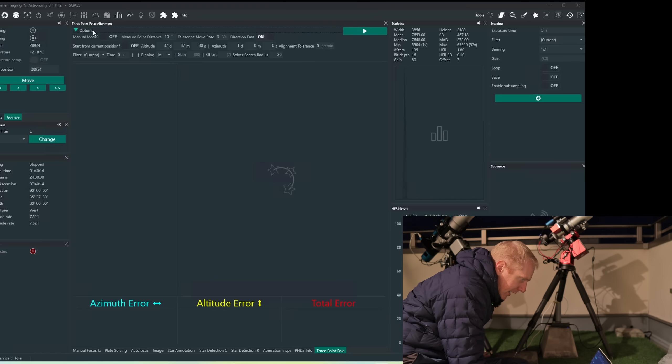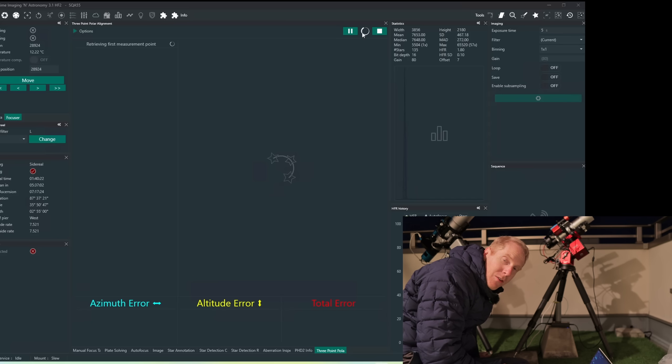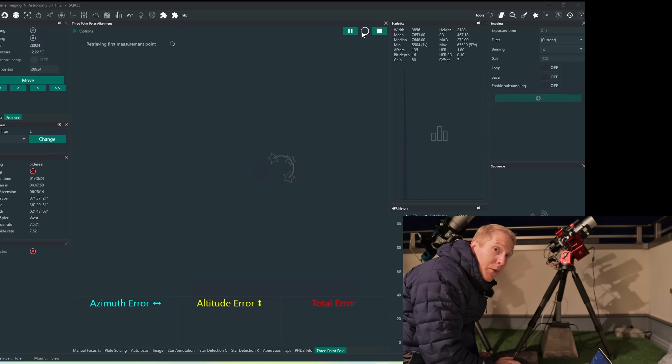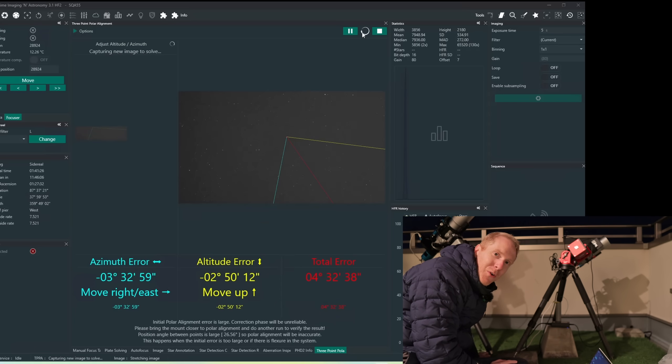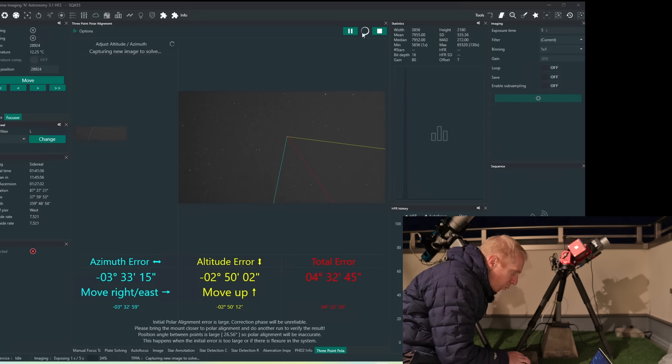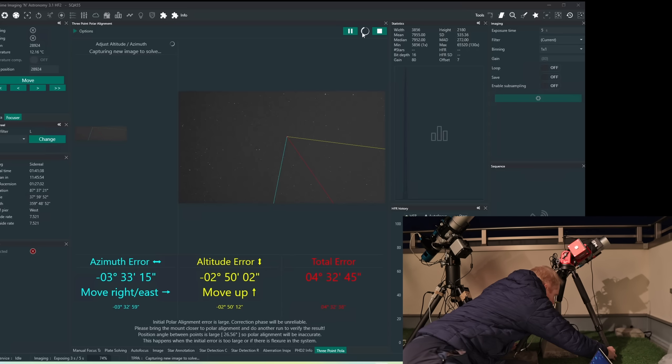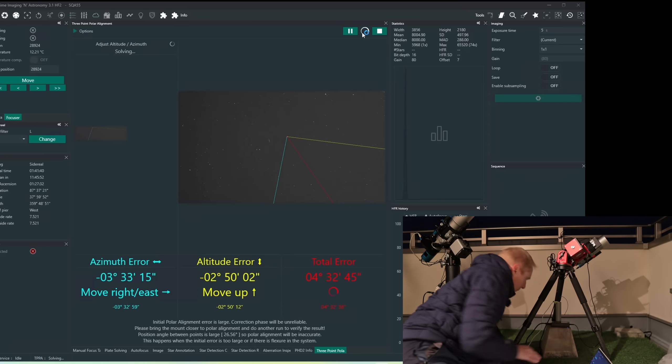So I'm in Nina, I am in the three-point polar alignment process. I'll just click play and let Nina do the work to basically analyze the stars, which it will do just as usual. Nina doesn't really care whether the mount is level or not. And as I expected, I am very far off from the polar alignment because I did this procedure with the mount and the tripod and the cinder block. You can see I should move right by three degrees.